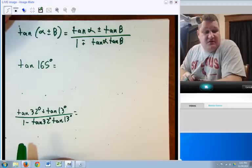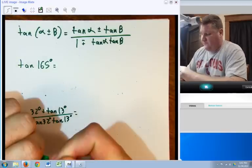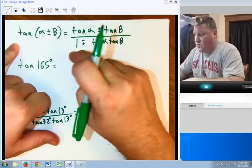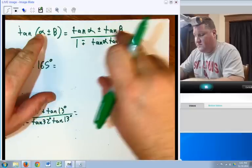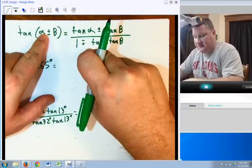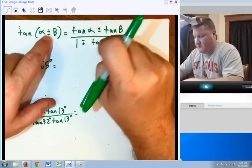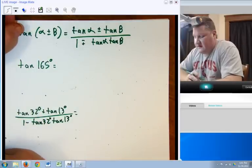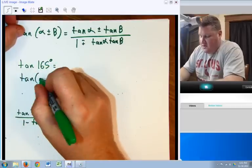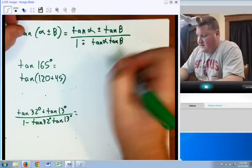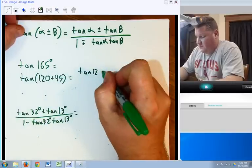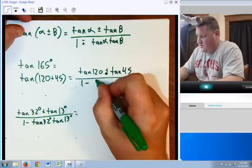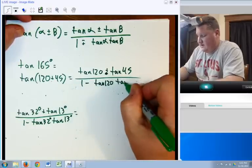Now, sine and cosine aren't the only ones that can be added and subtracted. We also have tangent of alpha plus or minus beta equals tangent of alpha plus or minus beta over 1 minus plus tan alpha tan beta. So the top sign is the same and the bottom sign will be opposite. We could do tan of 165 again. Probably the easiest thing here would be to say tan of 120 plus 45. And so, in this case, you're going to say tan 120 plus tan 45 all over 1 minus tan 120 tan 45.